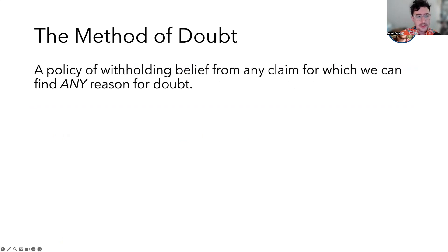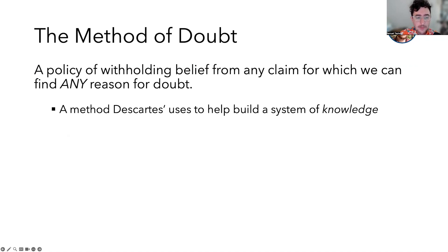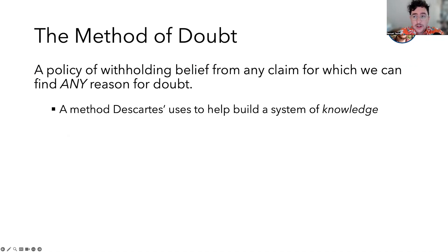The method of doubt is this policy of withholding beliefs from any claim we can find any reason to doubt, no matter how small that reason is. Descartes is using this as a method to help him determine what he does and does not know, so he can rebuild his knowledge in a stronger way. That's his goal.